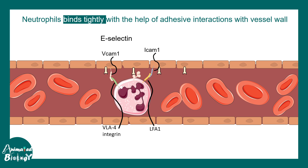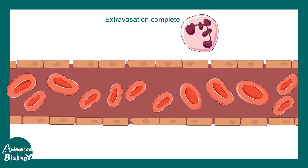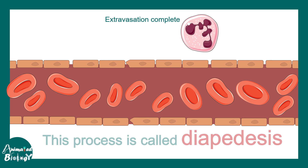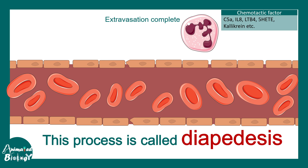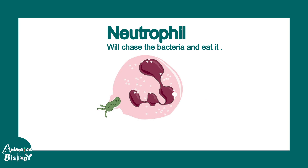After stronger adhesion is established, the neutrophil gets the trigger to change its cytoskeleton, squeezes itself through the narrow capillary wall, and moves out of the blood vessel into the tissue space — extravasation is complete. The neutrophil is then guided to the injury or wound site by chemotactic factors such as complement factors, interleukins, leukotrienes, etc., ultimately chasing and engulfing the bacteria.